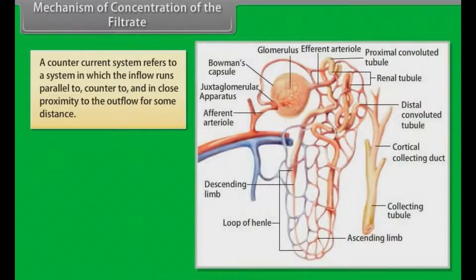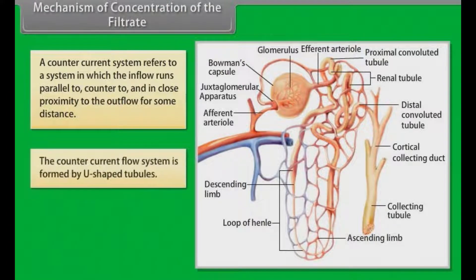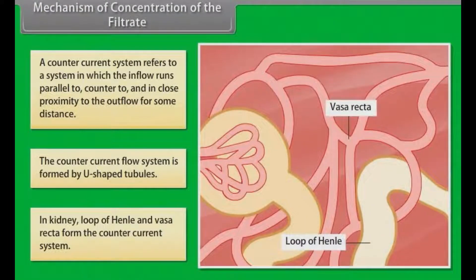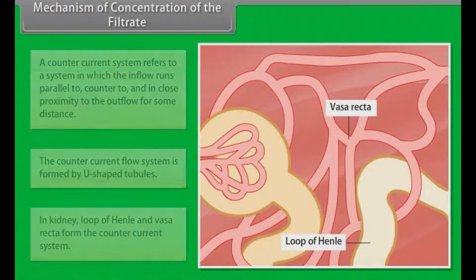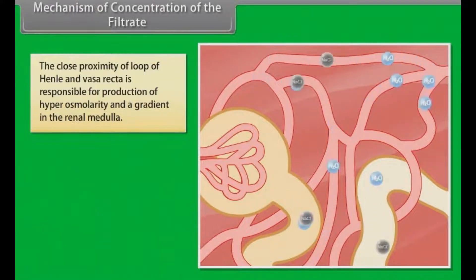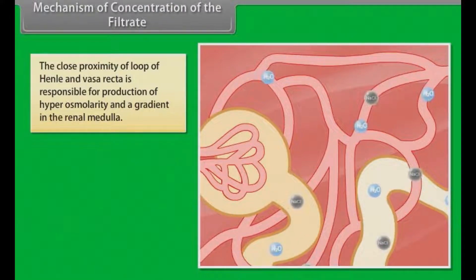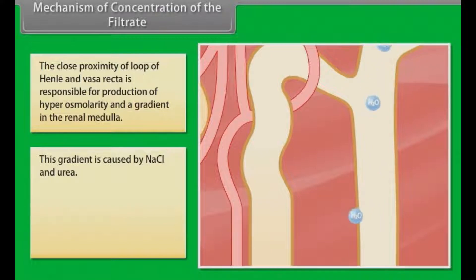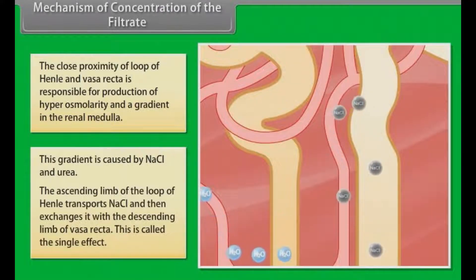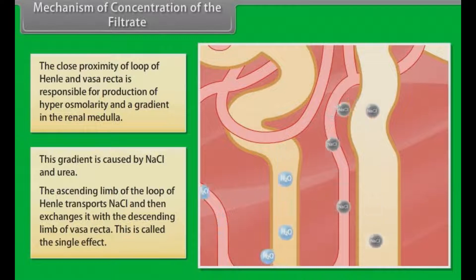Mechanism of concentration of the filtrate. A counter-current system refers to a system in which the inflow runs parallel to, counter to, and in close proximity to the outflow over some distance. The counter-current flow system is formed by U-shaped tubules. In the kidney, the loop of Henle and the vasa recta form the counter-current system. Their close proximity is responsible for the production of hyperosmolarity and a gradient in the renal medulla. This gradient is caused by NaCl and urea. The ascending limb of the loop of Henle transports NaCl and exchanges it with the descending limb of the vasa recta — this is called the single effect.